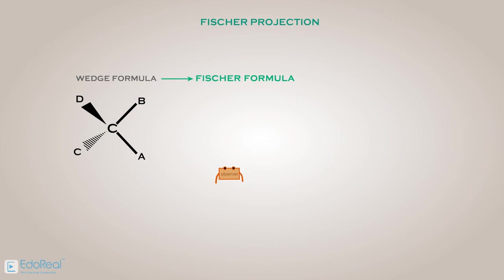Now, let us assume the observer standing perpendicular to the plane of the paper as shown. If the observer sees the molecule in this direction, the two horizontal bonds, A and B, are towards the observer, that is, parallel to his hands. And the other two bonds will be away from the observer, that is, D along his head, and the C along his legs.